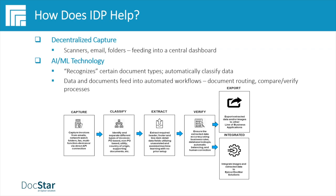After extraction comes verification: DocStar's IDP offering performs QC checks such as confidence threshold flagging of the data it just read. They configure IDP to perform math calculations such as adding the invoice line items that were extracted from the document to the subtotal, to make sure the vendor totaled the invoice correctly. Notably, some customers discovered their vendors were rounding dollar amounts up significantly, and IDP was quickly able to identify that, allowing them to go back to vendors and recoup money.